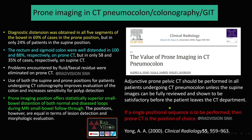Prone imaging is useful in CT pneumocolon or colonography. Diagnostic distension of all five bowel segments is better seen in 69% of cases in prone versus 24% in supine. The rectum and sigmoid colon are well distended in 100% and 88% respectively on prone CT, but only 58% and 33% in supine. Fecal residue redistribution is better on prone CT. Prone imaging also offers statistically superior small bowel distension in MRI small bowel follow-through, and better depiction of polyps in colonography.